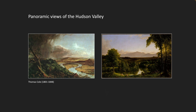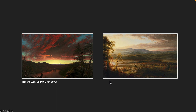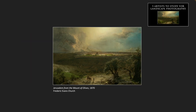The Hudson Valley just asks for panoramic views — it is so beautiful. Two of the great painters from the Hudson Valley are Thomas Cole and Frederick Church, and among his paintings are these phenomenally beautiful panoramas. These are big, really huge paintings. One of them we looked at in Five Artists to Study for Landscape was his Jerusalem from the Mount of Olives that he did in 1870.